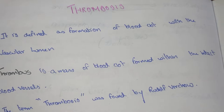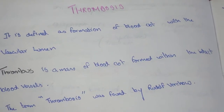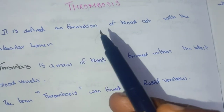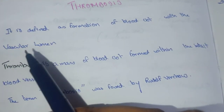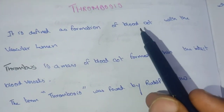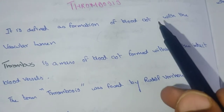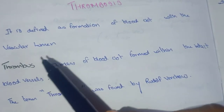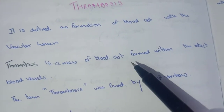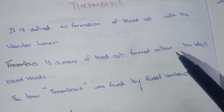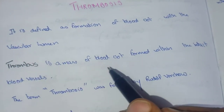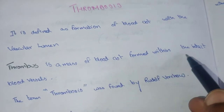Welcome to Medicine on our YouTube channel. In this video we are going to see about thrombosis. Thrombosis is defined as the formation of a blood clot within the vascular lumen. Thrombus is a mass of blood clot formed within the intact blood vessel.